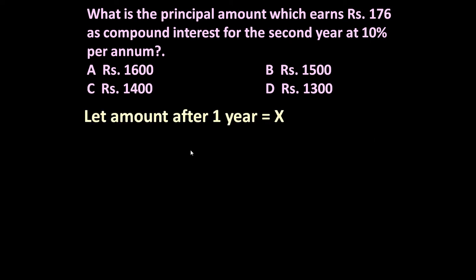So friends, let us assume amount after one year is X. Some amount was invested at compound rate of interest at 10%. After one year, let us assume it becomes rupees X. So the formula for compound interest is equal to P into 1 plus R upon 100 raised to the power N minus P.